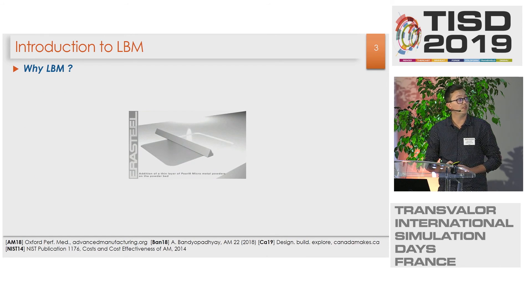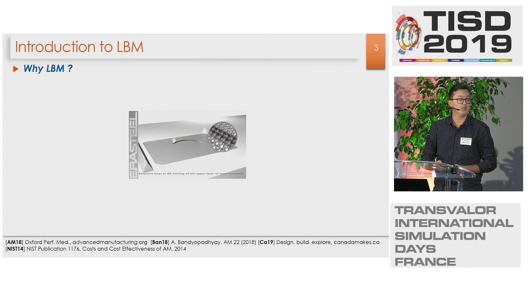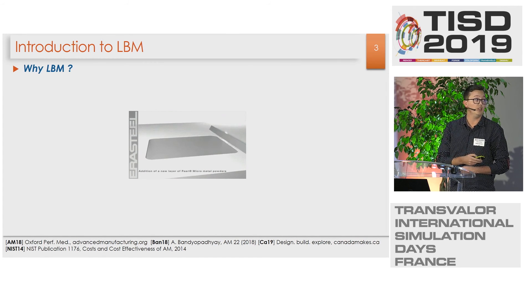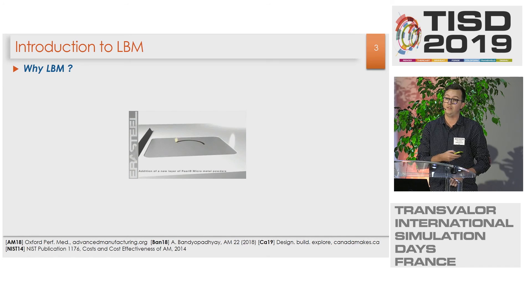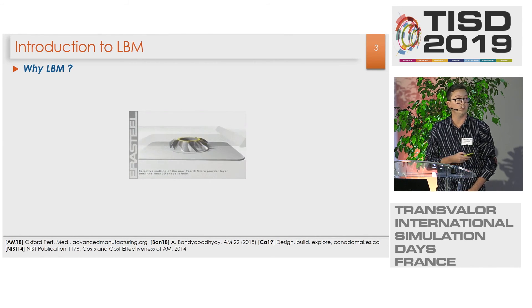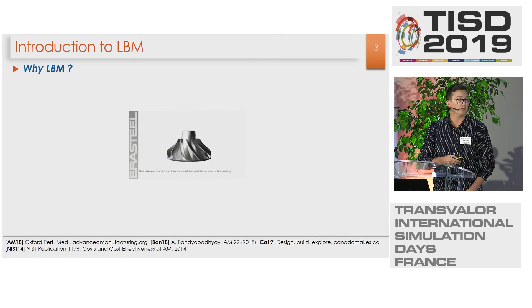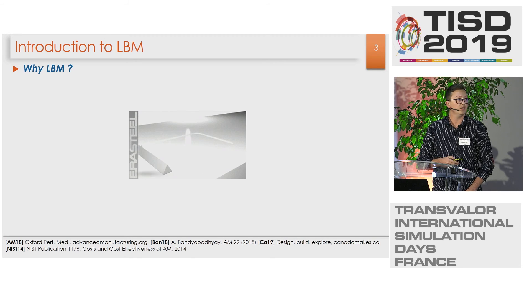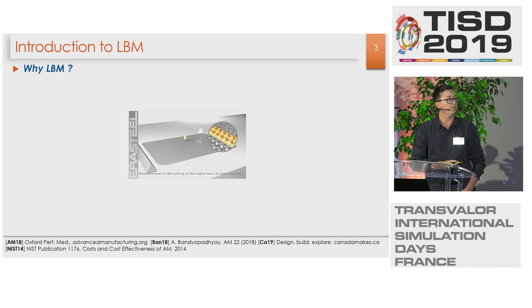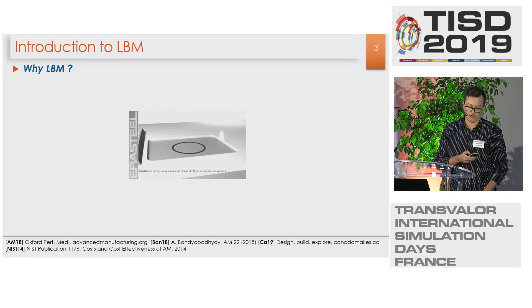So first, what is the laser beam melting process? Simply, we have a recorder that deposits a layer of powder bed with controlled thickness. As you can see on the video, a laser selectively melts the powder bed according to predefined trajectories given by a 3D CAD model. Then the powder bed is solidified, the support goes down to receive the next layer, and finally by repeating these steps we are able to obtain a 3D part.